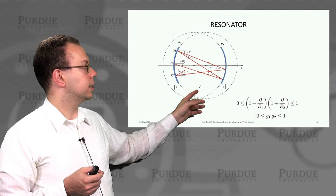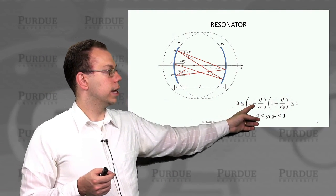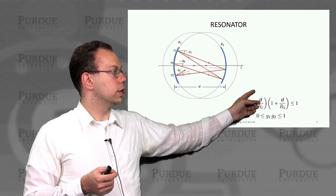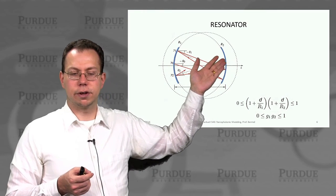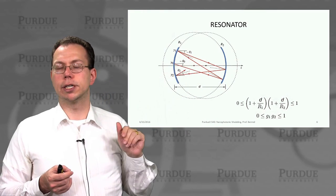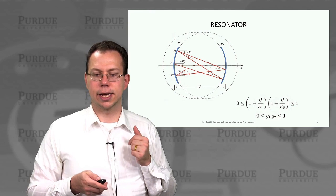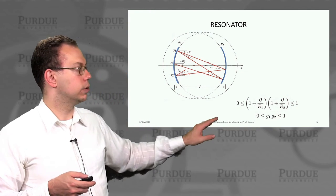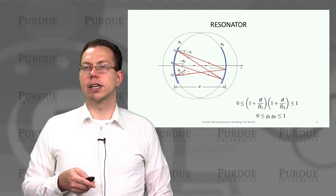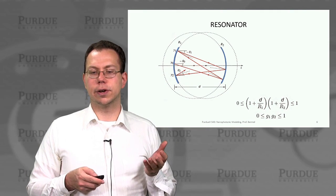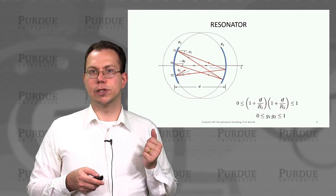In this case, it becomes something like this, where you have (1 + D/R1), where R1 is the radius of curvature for the first lens, times (1 + D/R2). R2 is the curvature of the second lens. Sometimes it's written simply as the first factor is G1 and the second factor is G2, so G1 and G2 have to have a product between 0 and 1.